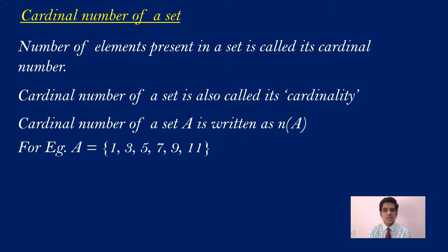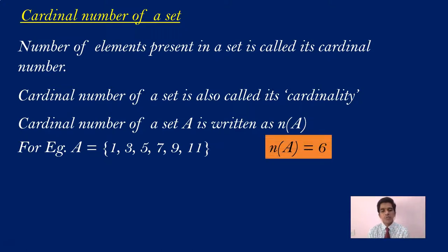Have a look at this example. Suppose you have a set A = {1, 3, 5, 7, 9, 11}. How many elements are there? There are actually 6 elements. So this 6 is called the cardinal number of A, and we write it as n(A) = 6.